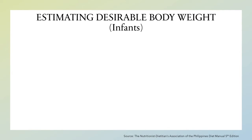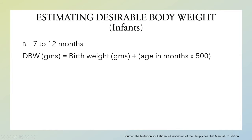Another formula applies if the infant is 7 to 12 months old. The formula to use is: birth weight in grams plus age in months times 500. Take note again that if the birth weight is not known, use 3000 grams.